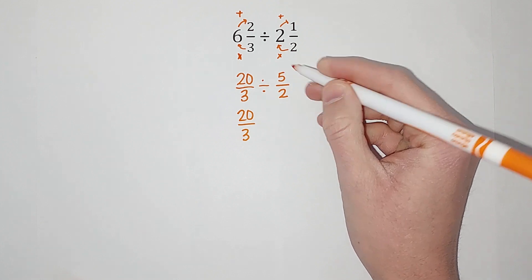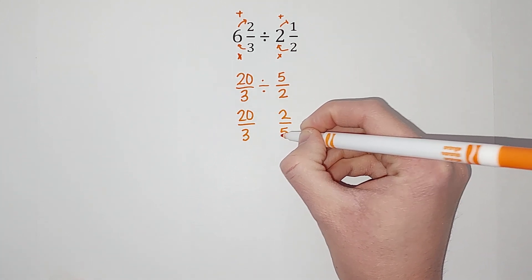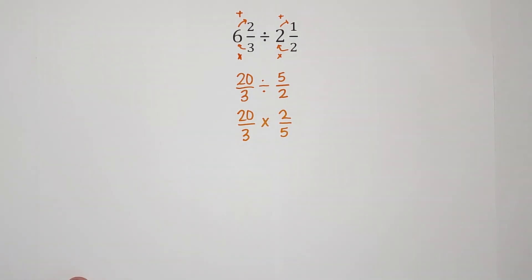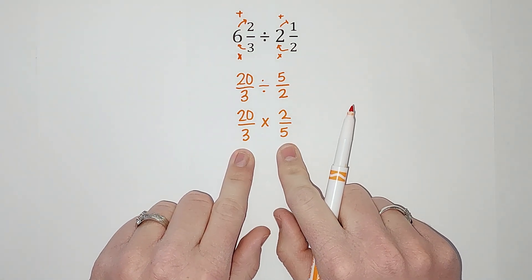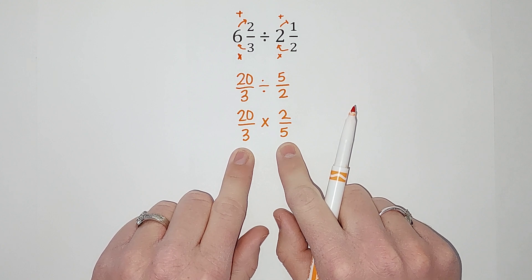So we're gonna take 20 thirds, we are going to flip this one so it is 2 fifths, and then we are multiplying. That's how you divide fractions guys. It's way easier than adding and subtracting them. Why is it easier? Because when we multiply them you don't have to have your denominators the same.